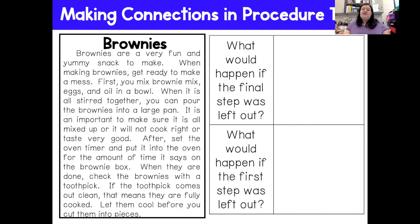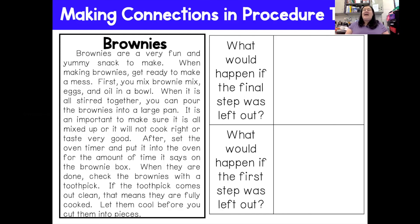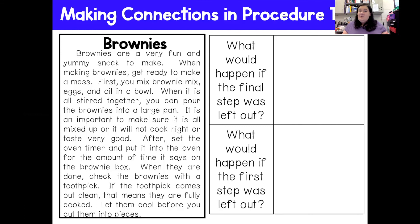The second question is: what would happen if the first step was left out? Well, if I did not put all my ingredients together and just put the brownie mix into the oven, I would just have cooked brownie mix powder. It would not turn into brownies if I didn't mix in the eggs and oil. So I wouldn't have brownies — that's what would happen if the first step was left out. Thank you so much for watching today's video. Hopefully you learned more about how to read a procedural text, how to put the steps in order, and a little more about cause and effect. Happy reading, boys and girls — see you next time!